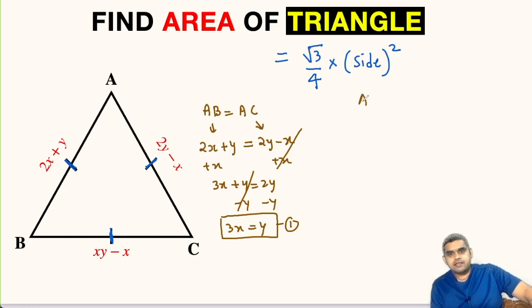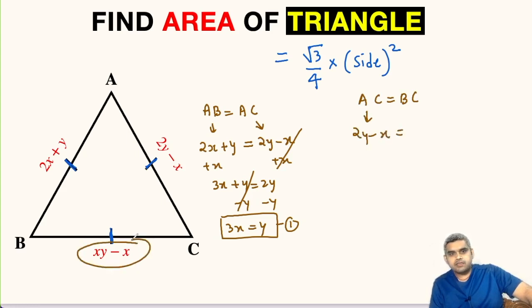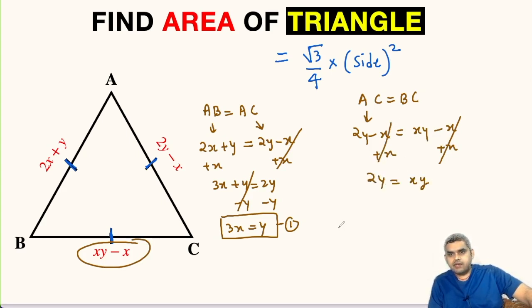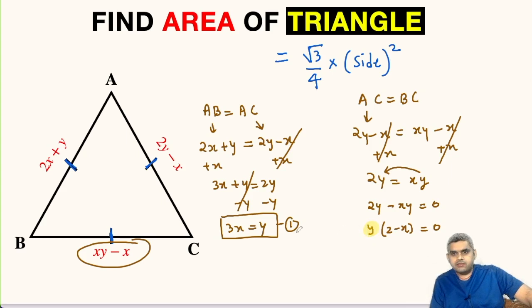Likewise, we can equate AC equals BC. AC is 2Y minus X and BC is XY minus X. Adding X to both sides cancels the X terms, giving 2Y equals XY. Shifting XY to the left-hand side gives 2Y minus XY equals 0. Taking Y common gives Y times (2 minus X) equals 0. We can substitute 3X in place of Y from equation 1.